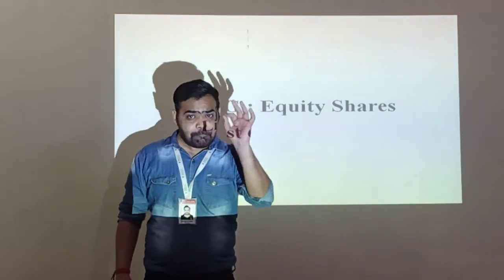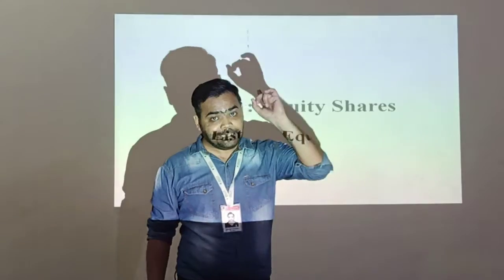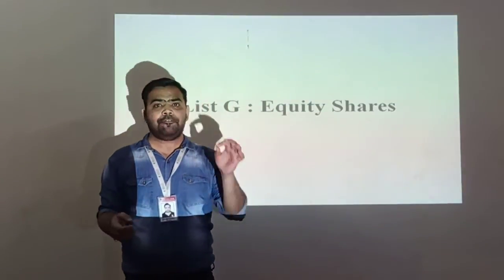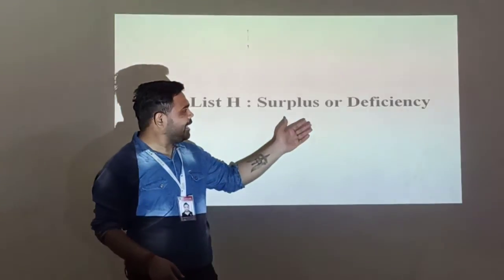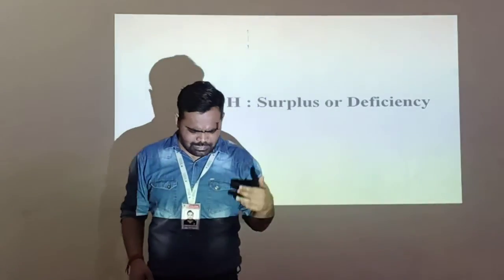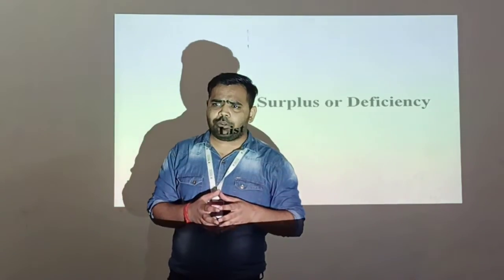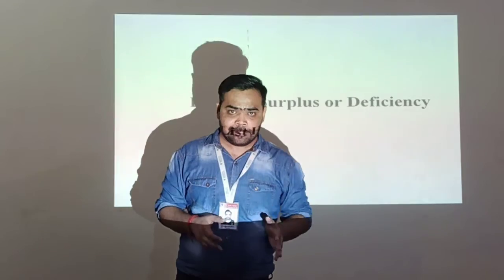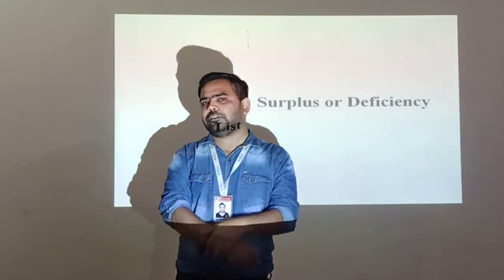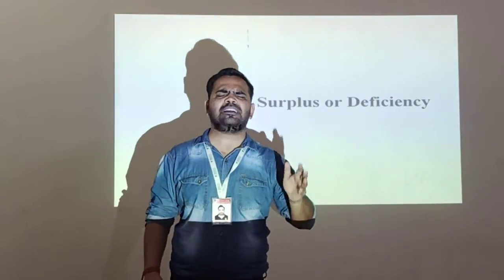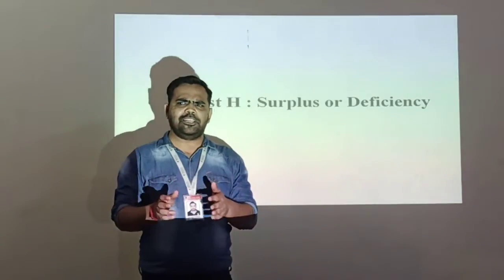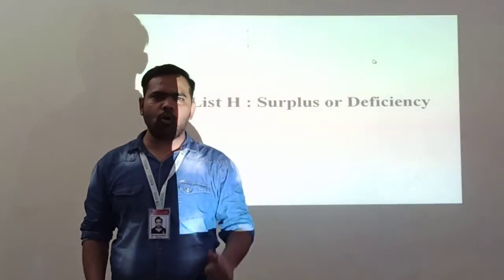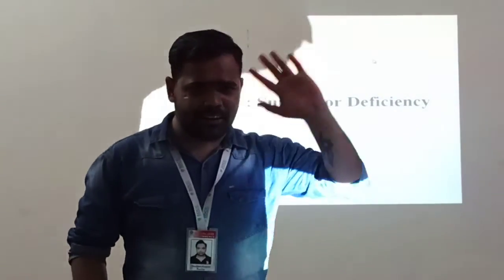If there is a balance amount it is called surplus. If we are not able to pay the equity shareholders or the preference shareholders, the balance amount is called deficiency. Deficiency is another name for the unpayable amount. I will tell you about deficiency in the next video. Thank you, learn from home, stay safe, bye, take care.